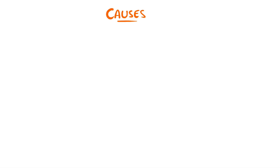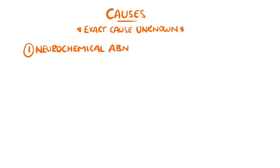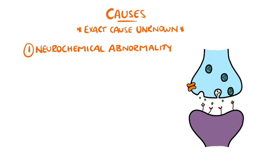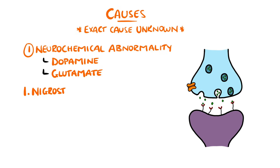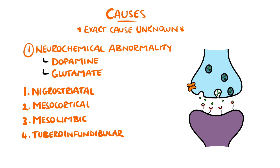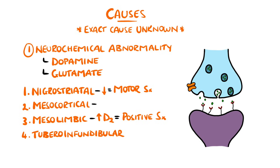The exact cause is not clear, but it is thought to be multifactorial. The main hypothesis is neurochemical abnormality, suggesting an imbalance of particularly dopamine and glutamate is responsible. The four dopamine pathways are the nigrostriatal, mesocortical, mesolimbic, and tuberoinfundibular pathways. Positive symptoms are thought to result from excess activation of D2 receptors in the mesolimbic pathway, motor symptoms from low levels of dopamine in the nigrostriatal pathway, and negative symptoms from low levels in the mesocortical pathway.